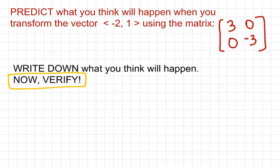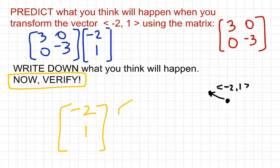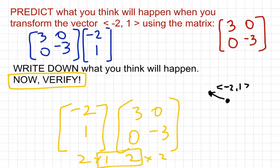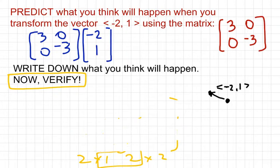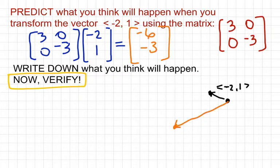Now that you've written your prediction, let's verify it. First, draw the original vector. Then do the matrix multiplication — remember that you must put the transformation matrix first; a 2-by-1 times a 2-by-2 is not defined, so the order matters. Once we do that multiplication, we get (-6, -3). At the same starting point, graph (-6, -3): that's back 6 to the left and down 3.